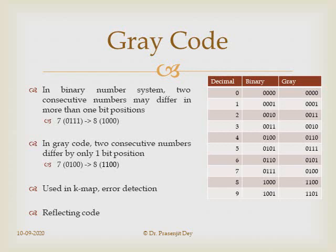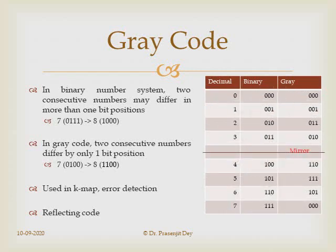Gray code is also called the self-reflecting code. To understand why, consider all 3-bit binary numbers (0 to 7). If we divide this sequence at the middle, one subsequence is 0–3 and another is 4–7. Discarding the most significant bit and looking from the middle outward, each pair of entries is a mirror image of the other. That is why gray code is called self-reflective.